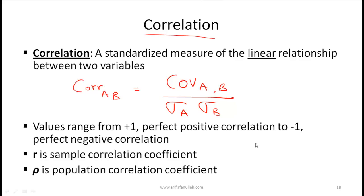Correlation is sometimes written using the Greek symbol rho. A correlation of zero means there is absolutely no covariance or correlation between the two variables. For sample data, the symbol used is R (the correlation coefficient), while for population data the Greek symbol rho is used.